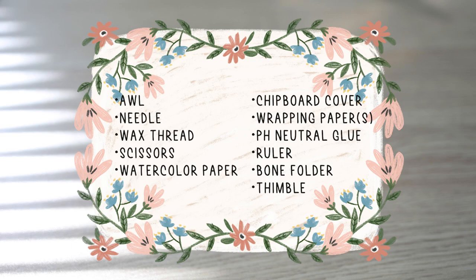Wrapping papers, plural, because you'll want a paper for your book cover and then one for the backside of your cover, pH neutral glue, ruler, and then also these are kind of optional because I didn't have them - a bone folder and a thimble, but everything else I think you'll need.